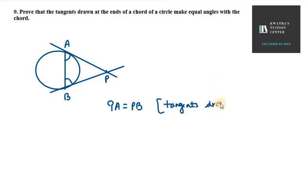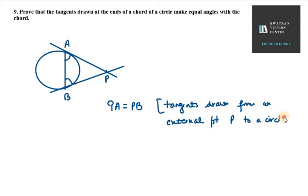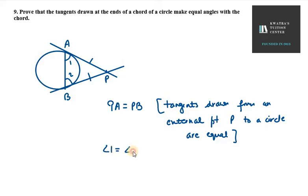Let's write this theorem first. So, PA is equal to PB. This means the angles that we have to prove equal — angle 1 and angle 2 — are equal. The reason is: angles opposite to equal sides of a triangle. So, angle 1 is equal to angle 2.